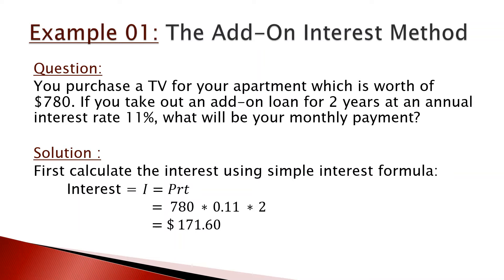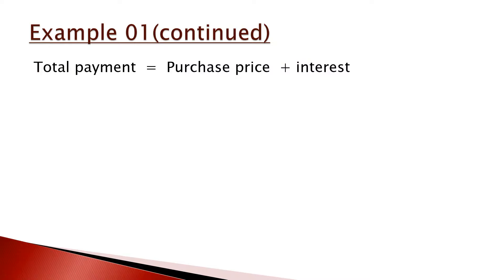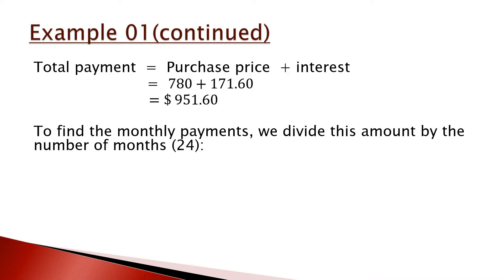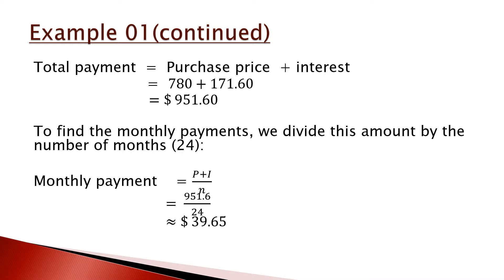Now we need to figure out the monthly payment. We add the interest to the loan itself: $780 plus $171.60 equals $951.60 total. To find the monthly payment, we determine the number of months: 2 years times 12 equals 24 months. The monthly payment is (P + I) / n = $951.60 / 24, which is approximately $39.65.